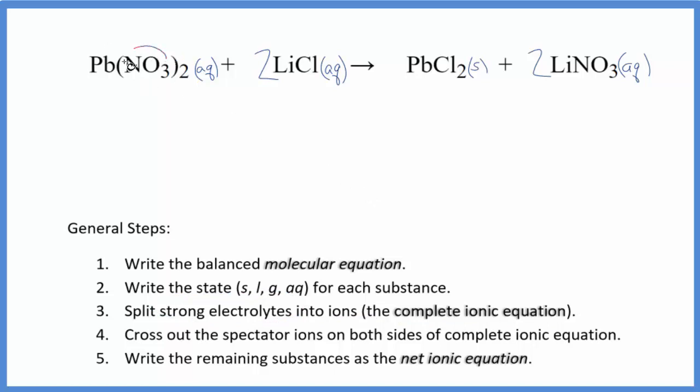So we have nitrate. The whole thing is 1 minus. Since we have two of them, lead has to be 2 plus. So we have the lead 2 ion, and I won't write the states now. Let's write that later. Two nitrate ions. Lithium's in group 1, it'll have a 1 plus ionic charge.